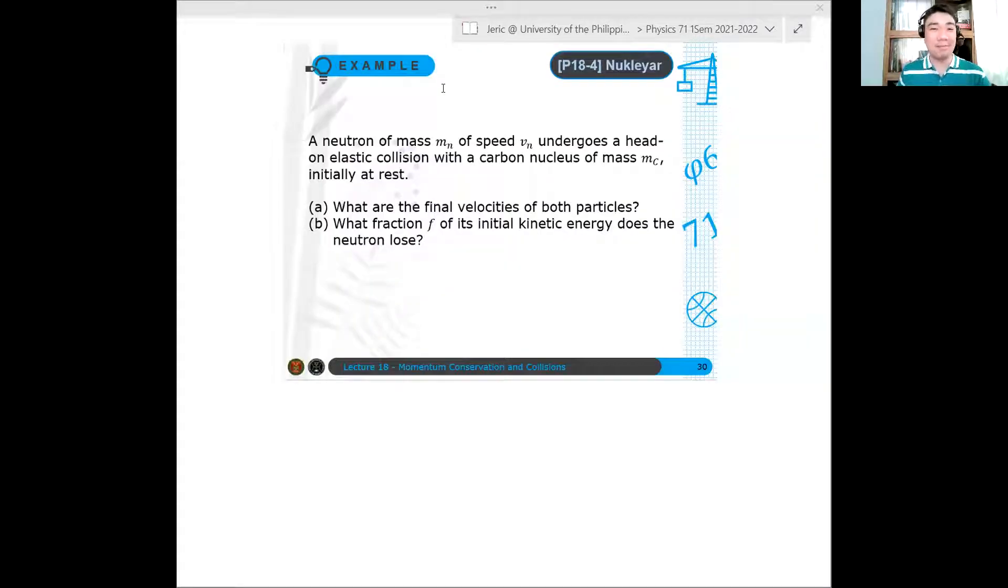Okay, so time has elapsed. Let's solve this problem. So we have again, a neutron of mass mn and speed vn undergoing an elastic collision with a carbon nucleus. So the given quantities here are mA, mB. Then you have mA equals mn, and then the initial velocity vA equals what? And again, this is given, this is vn.